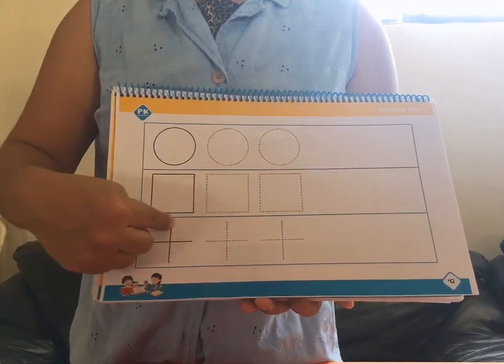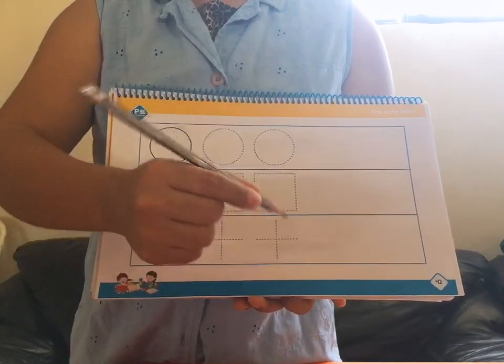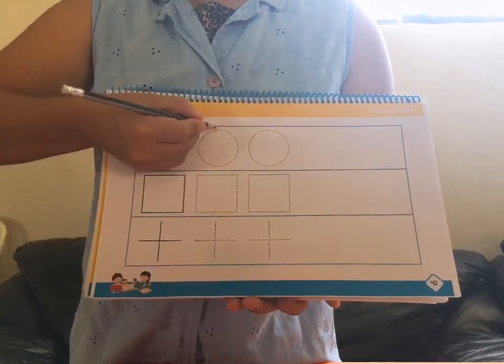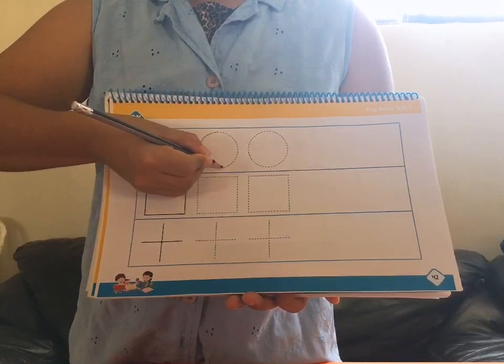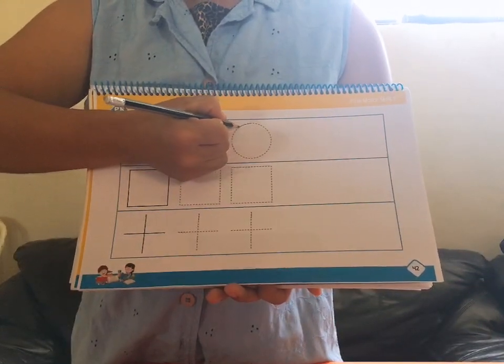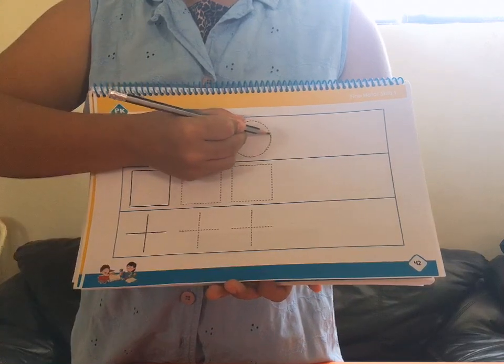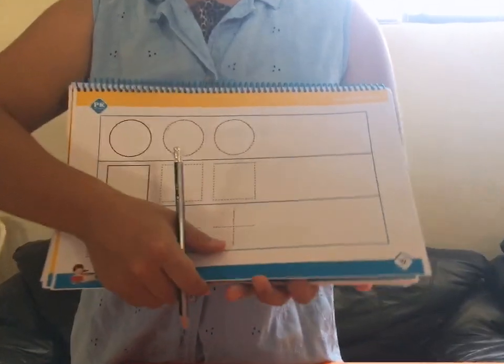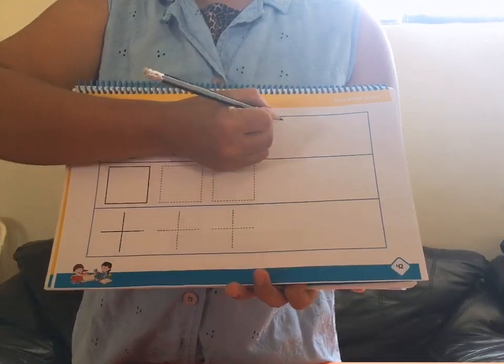Square, cross. Now you have to use the pencil. You have to trace from top like this: circle, the next one from top, circle. Now you have to do it without the help of these lines, so you start from top: circle, again circle.